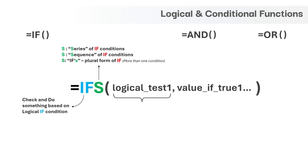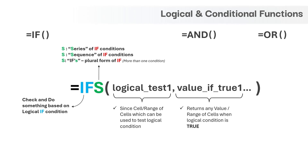The first argument is the logical test one, and we can provide a single cell or range of cells along with a comparison operator as input to check any logical condition. The second argument, which is value if true one, is linked to the first logical condition — if the first logical condition is true, this argument will return the value, which can be any value or range of cells. This function can be extended to multiple logical conditions, each value returned linked to its own logical condition, typically identified by numerical sequence one, two, three, and so on.